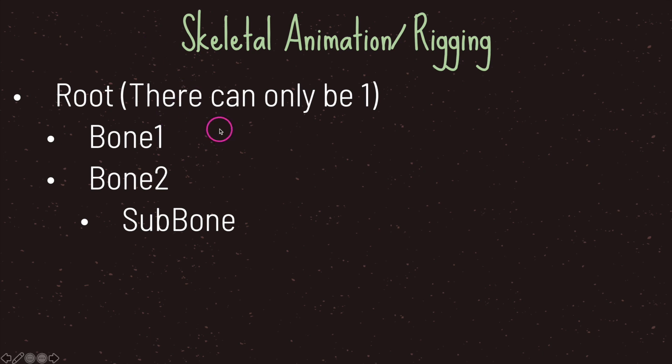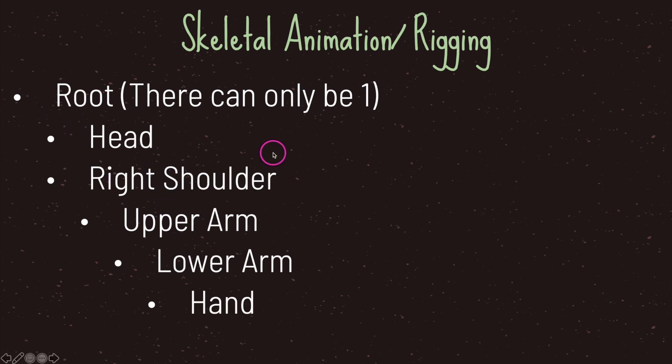So in our skeletal animation hierarchy you usually have a root and there can only be one root in your skeletal animation software and beneath it you'll have bones and sub bones. But when you're doing your animation you may have something like this. You have a head, you have a right shoulder and underneath that right shoulder you have an upper arm and beneath upper arm you have a lower arm and beneath lower arm you have a hand.